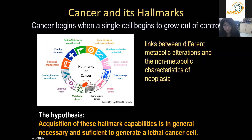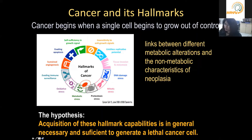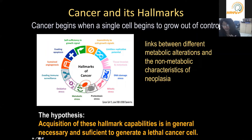Some of the hallmarks include limitless proliferative potential, insensitivity to growth signals, evasion of immune response, and apoptosis. Although Warburg received the Nobel Prize in 1923 for identifying that cancer cells produce lactate even in the presence of oxygen, it has only been quite recently recognized that metabolism is an emerging hallmark of cancer. This is probably because the connection between metabolic alterations and how they impinge upon the non-metabolic characteristics of cancer has only recently been delineated.